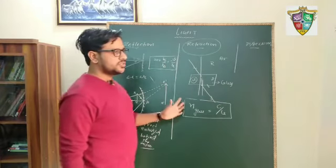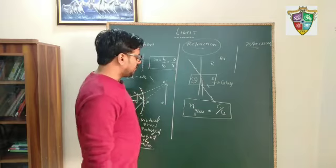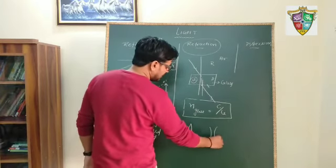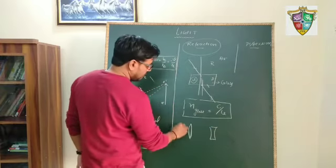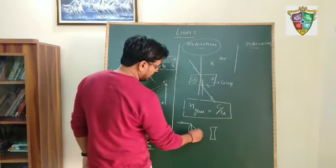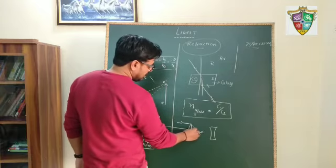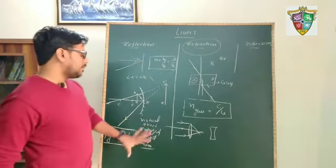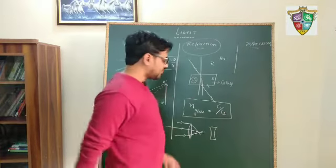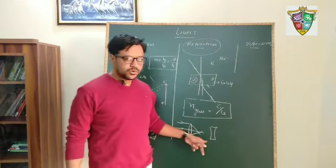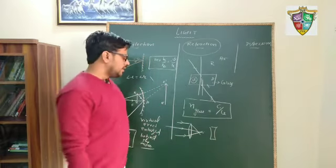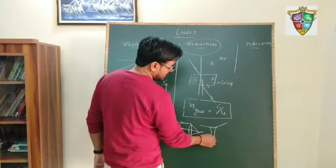In refraction, we will discuss lenses. This is a convex lens and this is a concave lens. When light rays come parallel to the principal axis, for a convex lens all rays converge — that's why it is known as a converging lens. The concave lens diverges the rays and always forms an erect and virtual image.